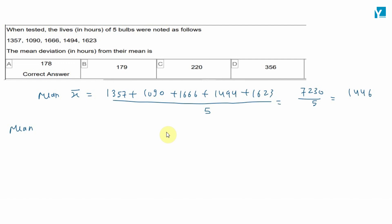Now we have to find out mean deviation. Mean deviation will be 1 upon 5 into sigma i equal to 1 to 5, mod of xi minus x-bar. That is equal to 1 upon 5, x1 minus x-bar.